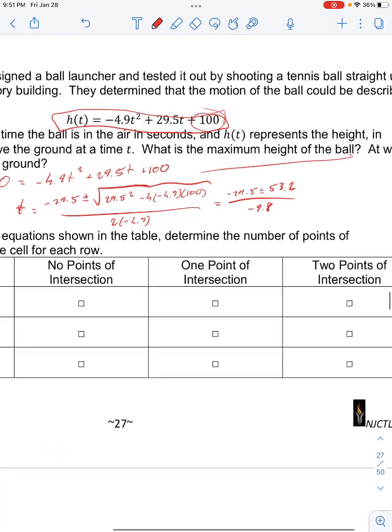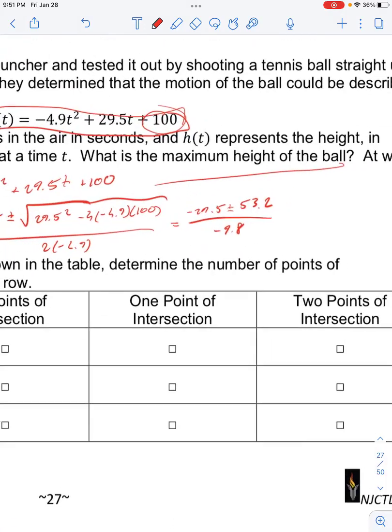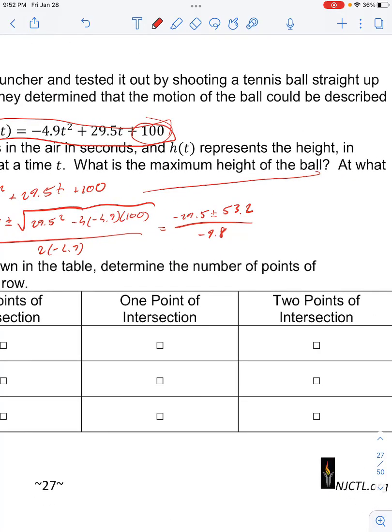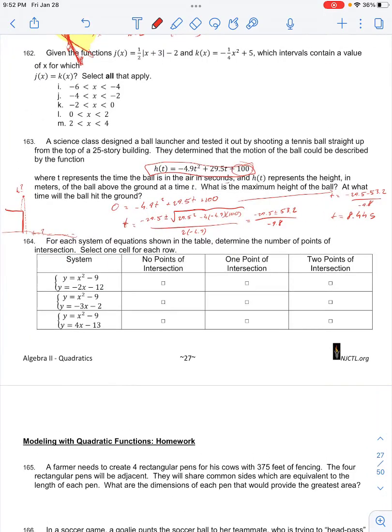So our two times - if we look at the time that we want it to hit the ground after we launch it, that time would have to be positive, which means that we have to consider the time that would give us, if this is a negative in the denominator, then the numerator would also have to be negative. So we have to look at this negative solution. The time at which the ball would hit the ground would be t equals negative 29.5 minus 53.2 over negative 9.8, which would be the time of 8.44 seconds. Yes, t is in seconds.